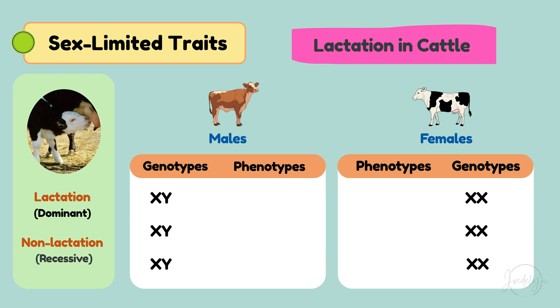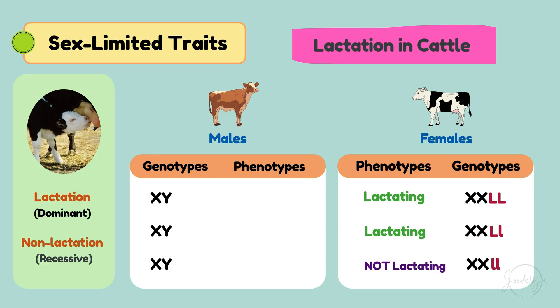In females: both dominant LL equals lactating; one dominant L and one recessive l equals still lactating; both recessive ll equals not lactating.